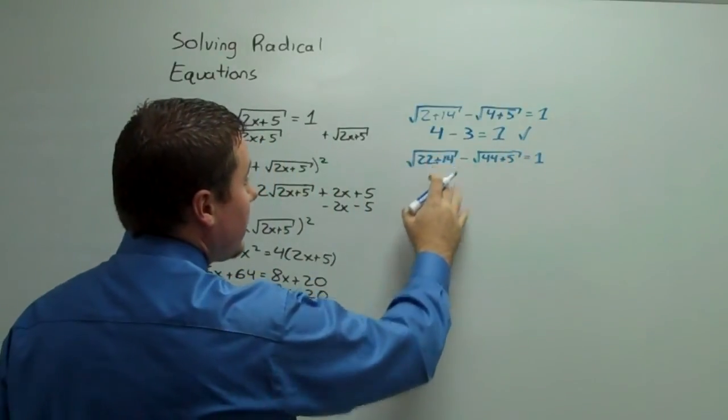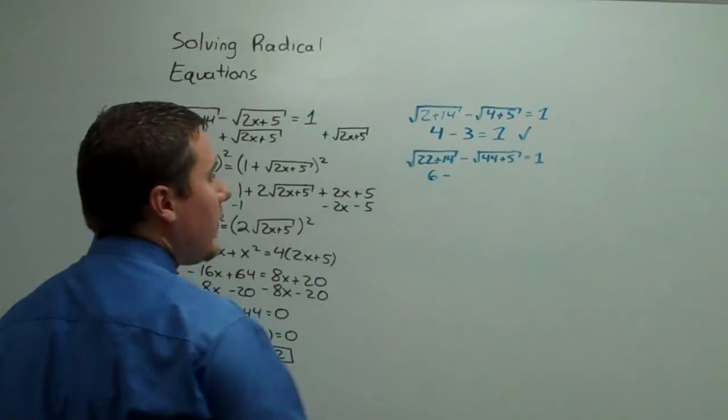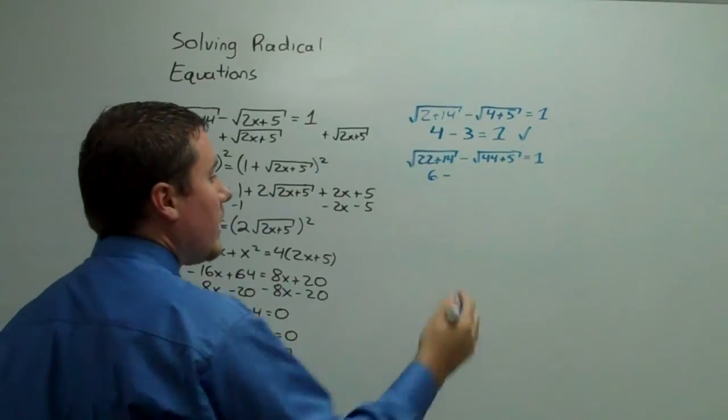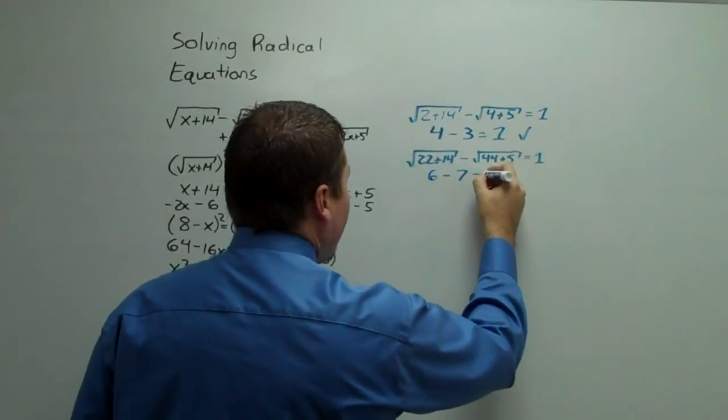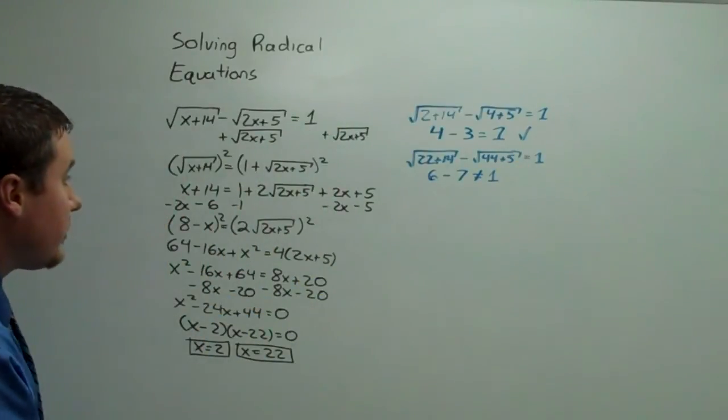Also a perfect square. So 22 and 14 is 36. The square root of 36 is 6. 44 and 5 is 49. The square root of 49 is 7. That is not equal to 1. So this is not a solution.